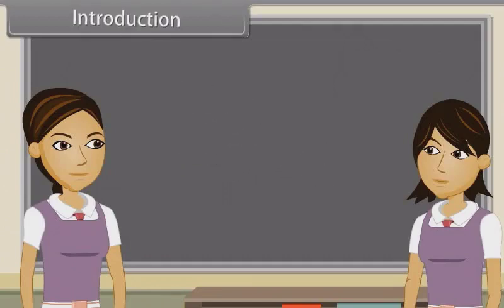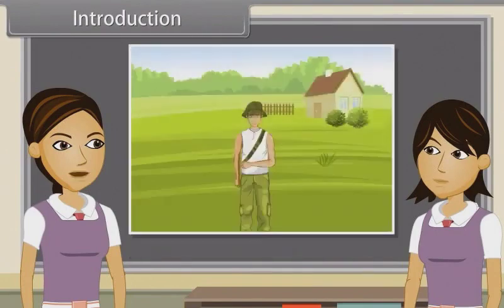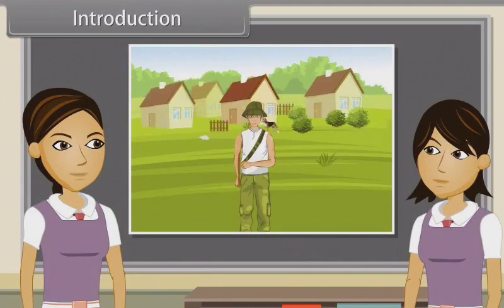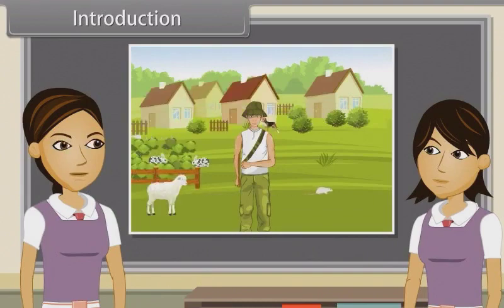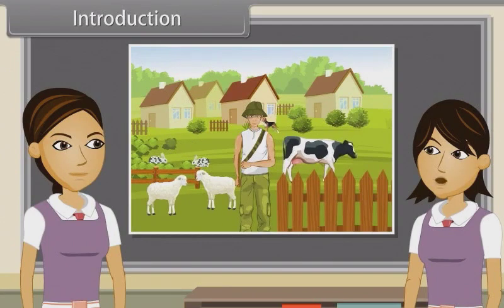We know that plants and animals were present on this planet before the human race evolved. As man started using plants and animals for its basic needs, he started giving names to plants and animals in their own language. A common name is a name in general use within a community, and it is often contrasted with a scientific name.